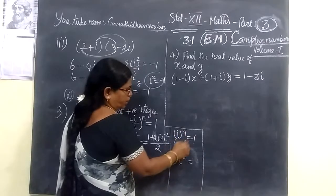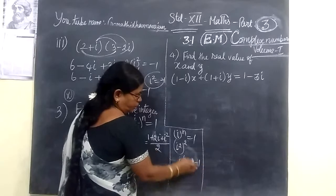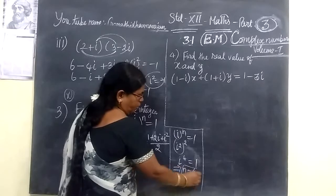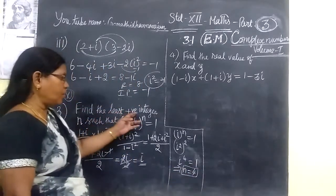Here this you can write i squared whole square, i power 4, this is something but equal to 1. This will imply n equal to 4. So value of n equal to 4. That is, least positive integer.